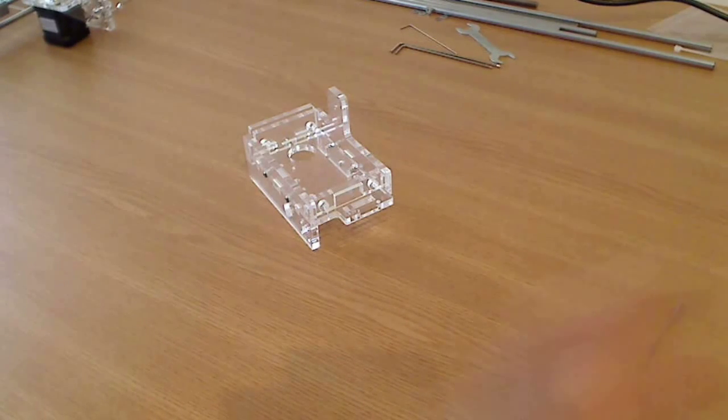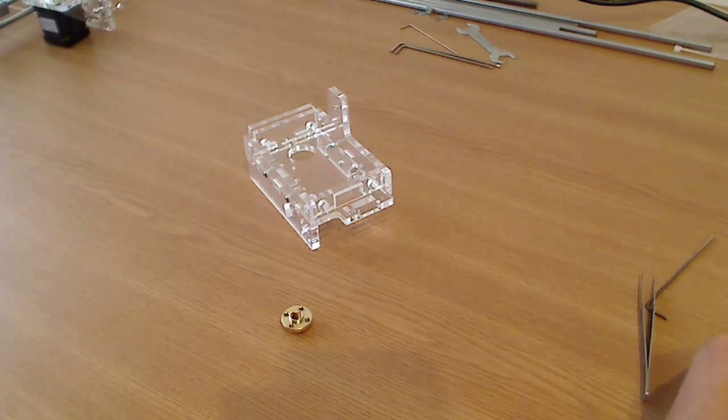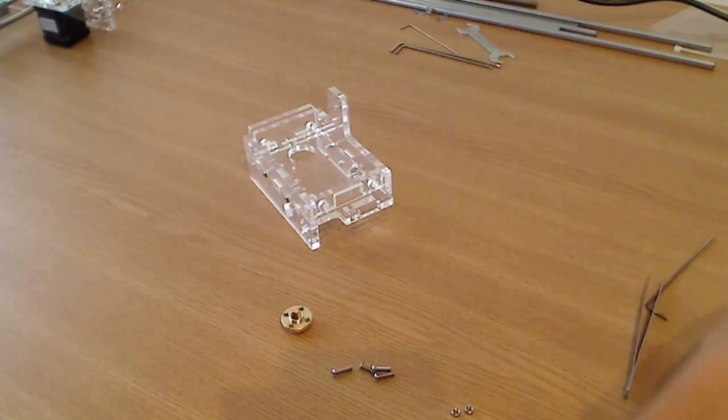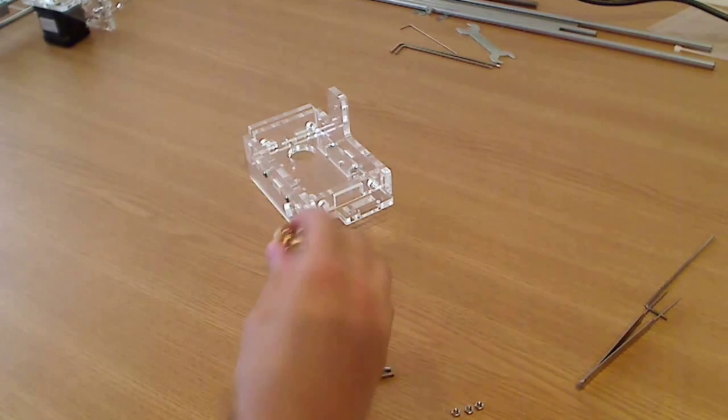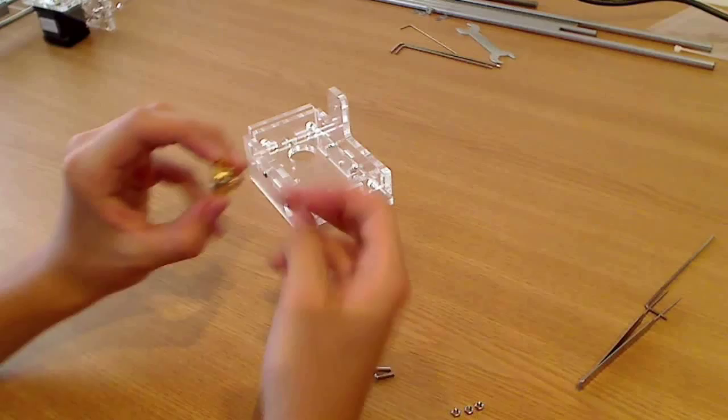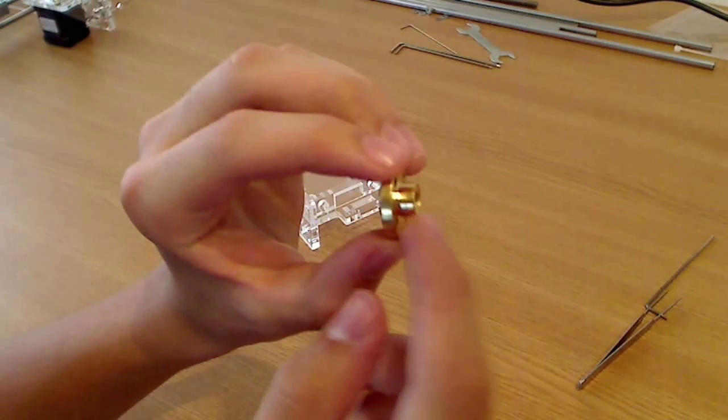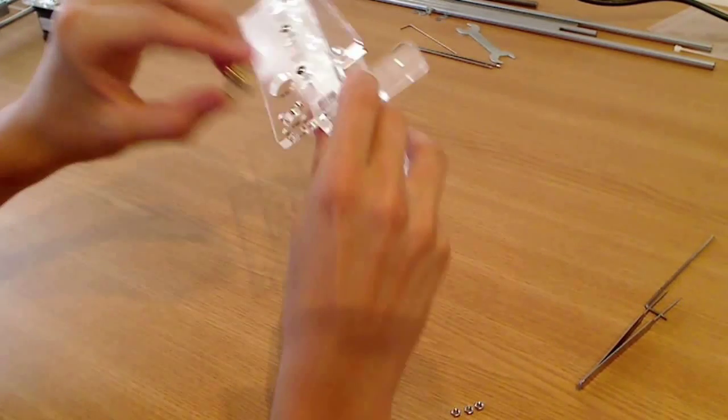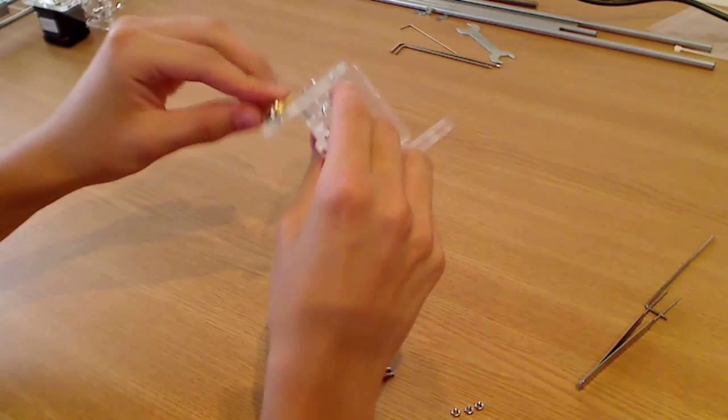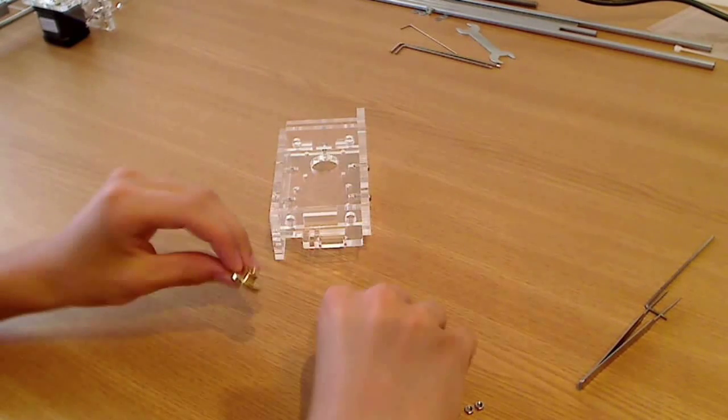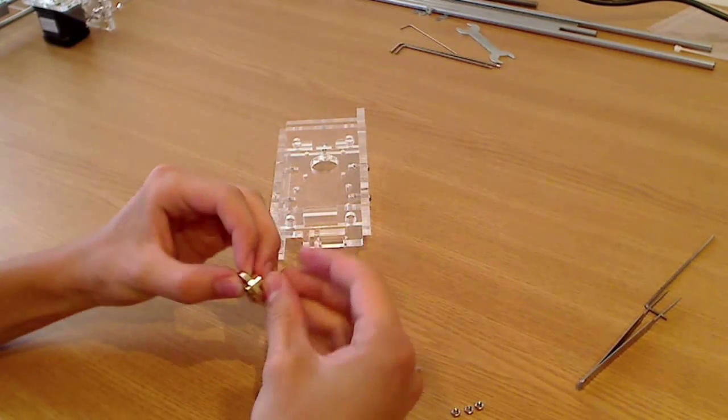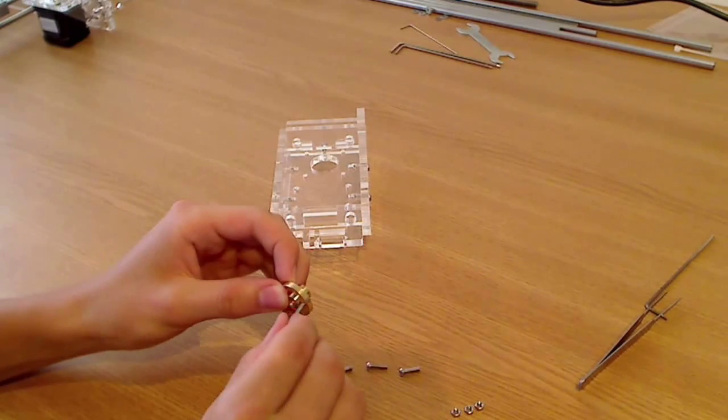Now we will need a lead screw, 4 M3 12mm screws, and 4 M3 nuts. We will mount it this way. You gotta be careful so this longer part will fit in here. Like this. So we will mount it this way, so the longer part is right here.